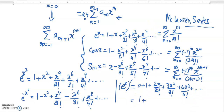So it will be 1 plus — 2 over 2 factorial gives x — and then 3x squared over 3 factorial. Now 3 factorial is 3 times 2 factorial, so the 3 cancels and 2 factorial remains, giving x squared over 2 factorial. Similarly, 4 over 4 factorial gives x cubed over 3 factorial.